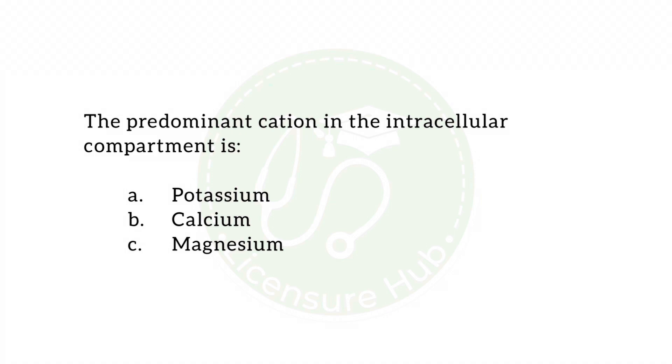Our next question asks: the predominant cation in the intracellular compartment is A) potassium, B) calcium, or C) magnesium. This question examines our knowledge of body compartments — within cells and outside cells. 'Intra' means inside, 'cellular' means cells, so intracellular means inside the cell. Extracellular means outside the cell. A cation is a positively charged ion, while an anion is a negatively charged ion or electrolyte.